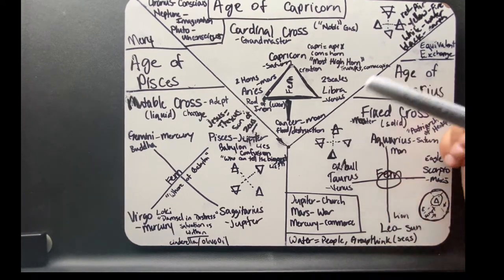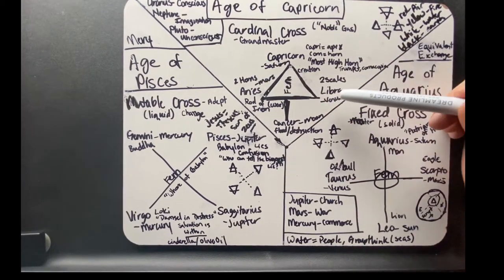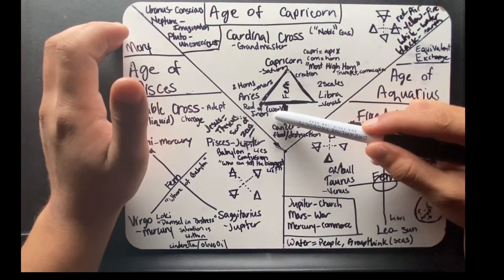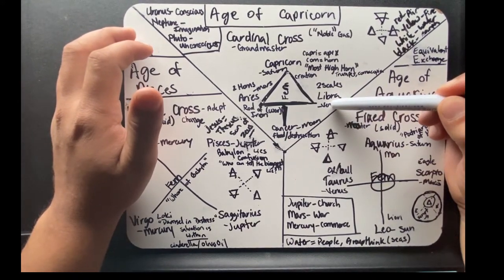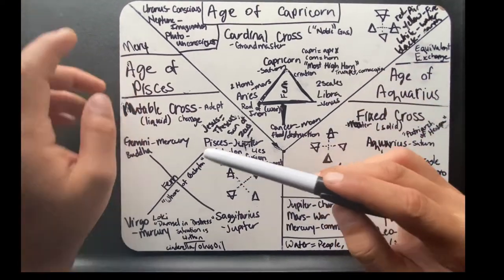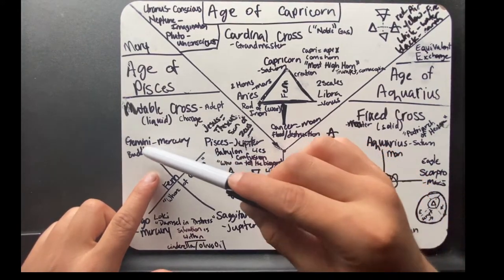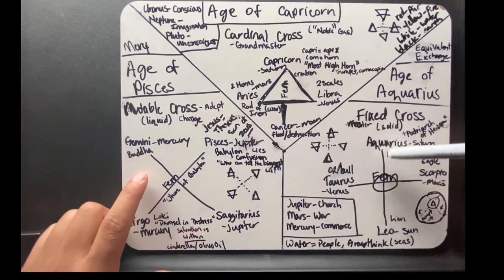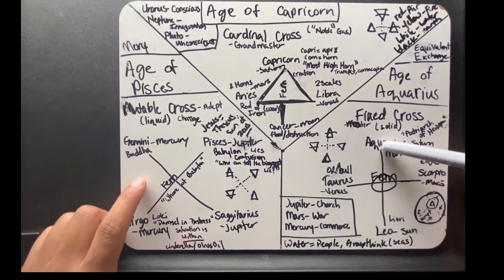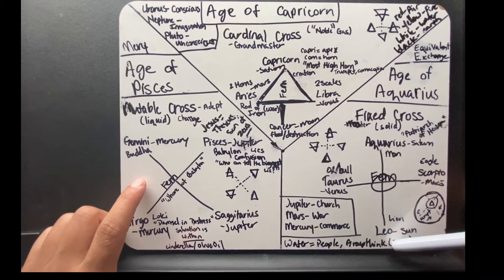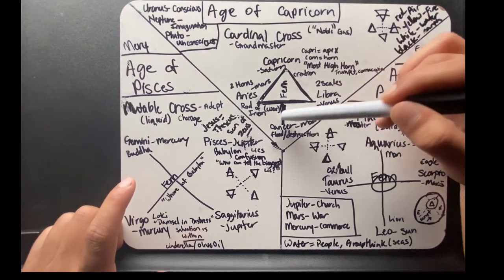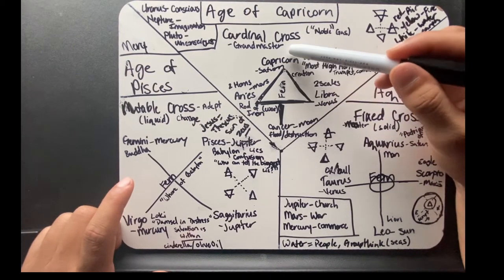You have Aries on the left with the two horns, and then Libra with the two scales. Aries, the rod of iron, the god of war, balanced with Libra, the scales of justice. Also notice that the mutable cross has no ruling axis. The fixed cross is ruled by Aquarius, air, so it's ruled by the masculine axis. Air masculine, fire masculine—this is their feminine axis. The Age of Capricorn, this one, is ruled by the feminine axis. Capricorn sits at the top.